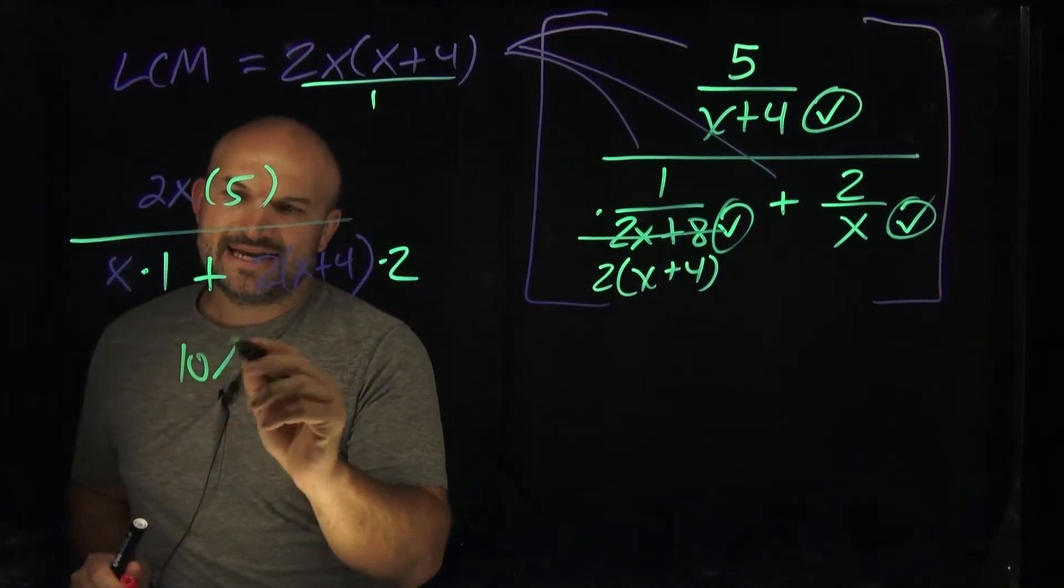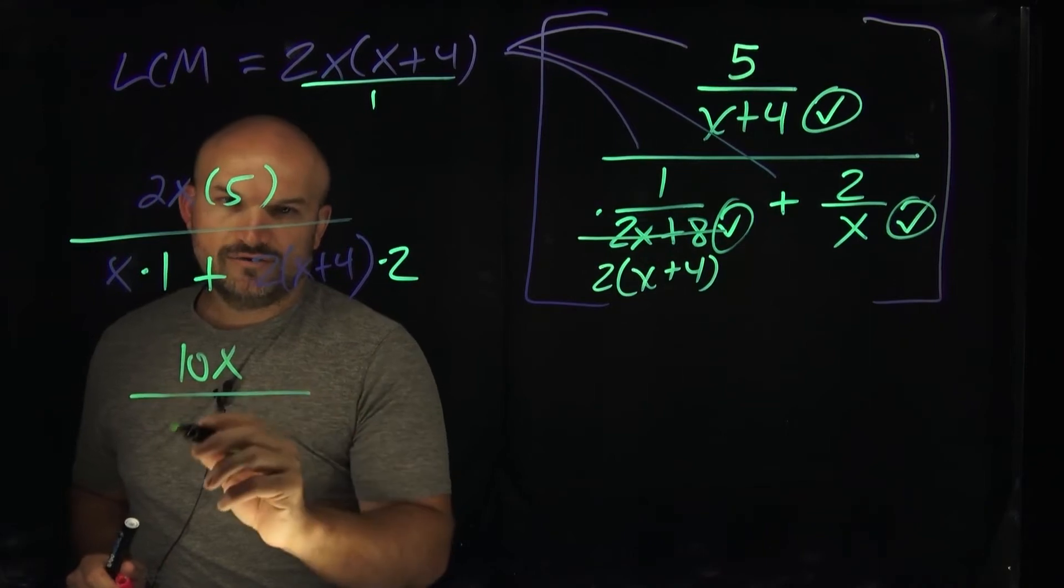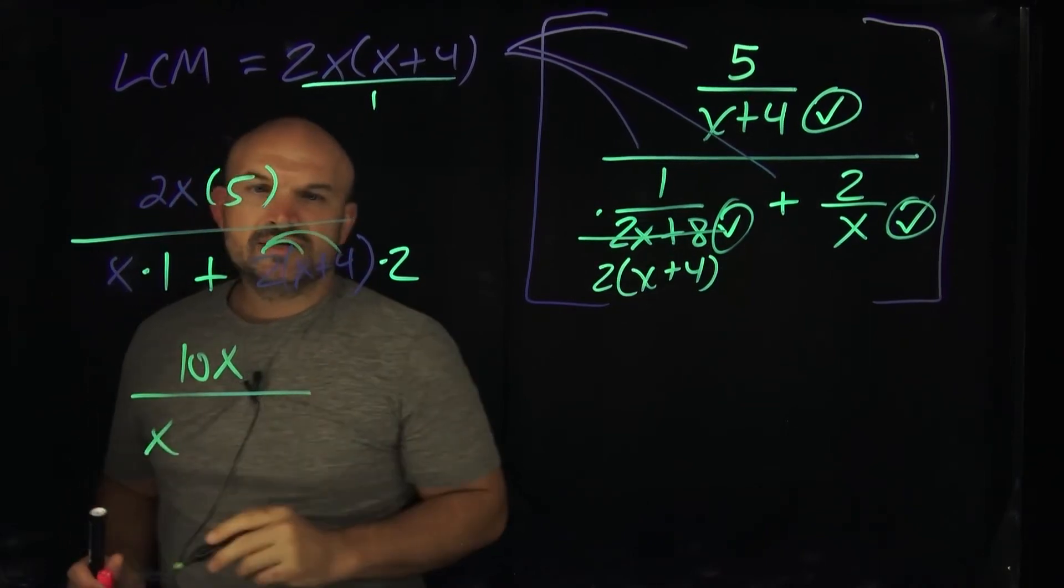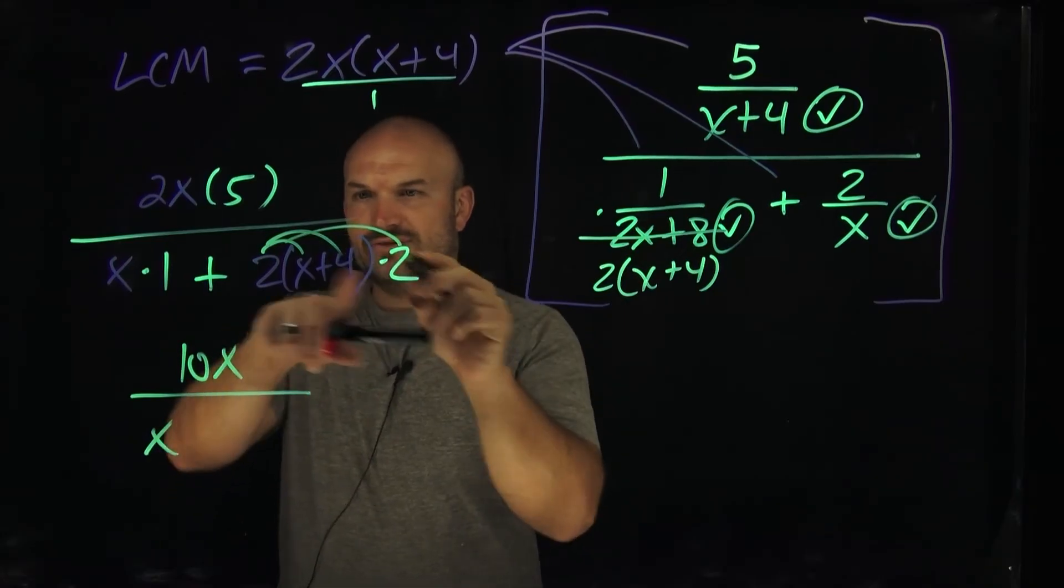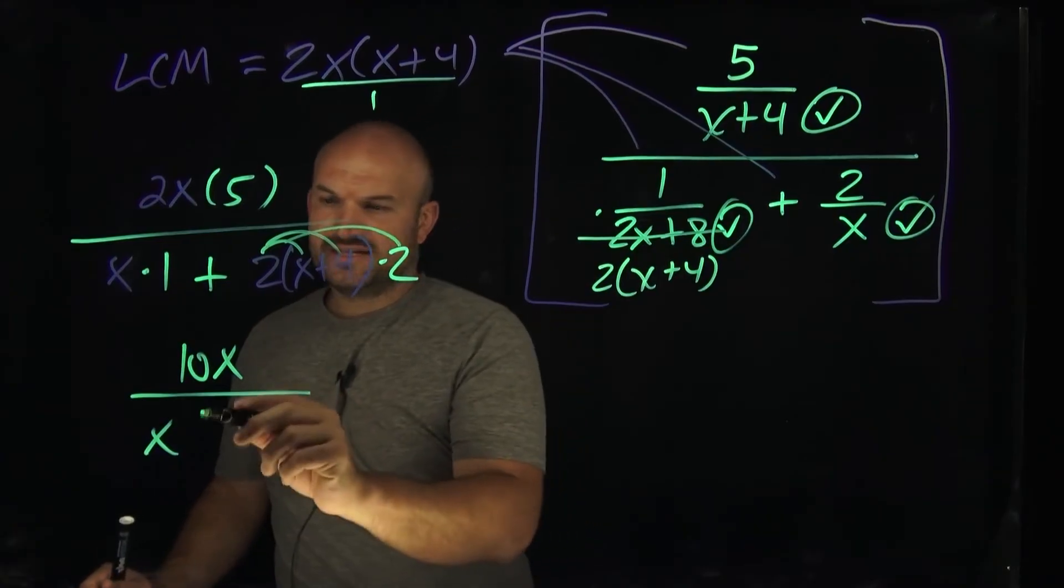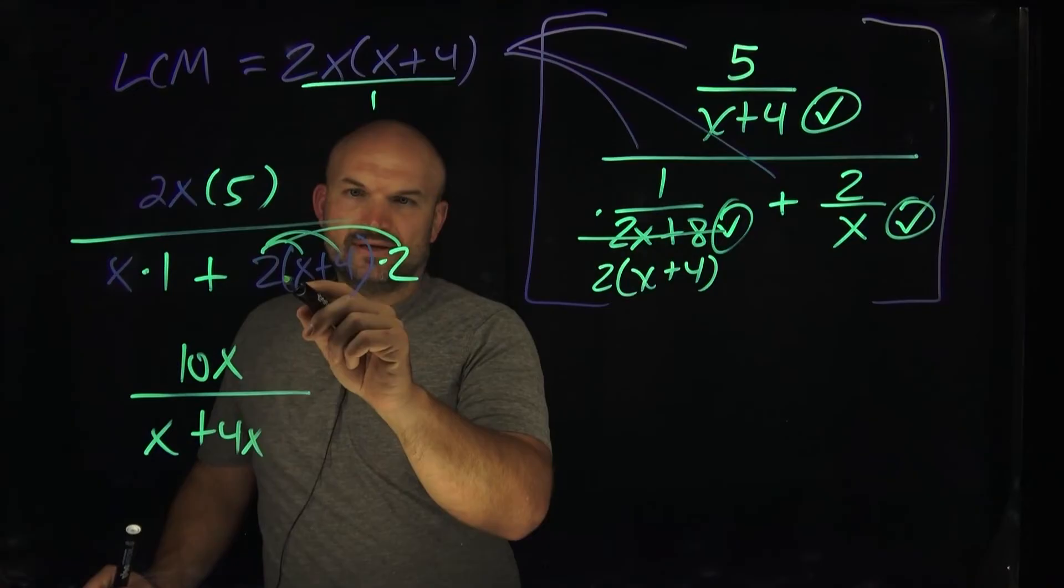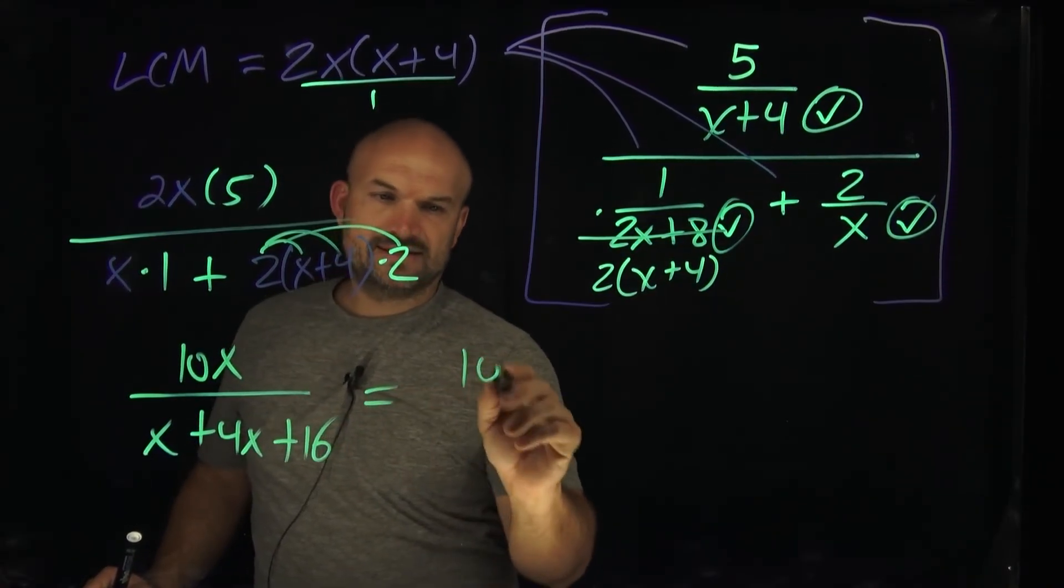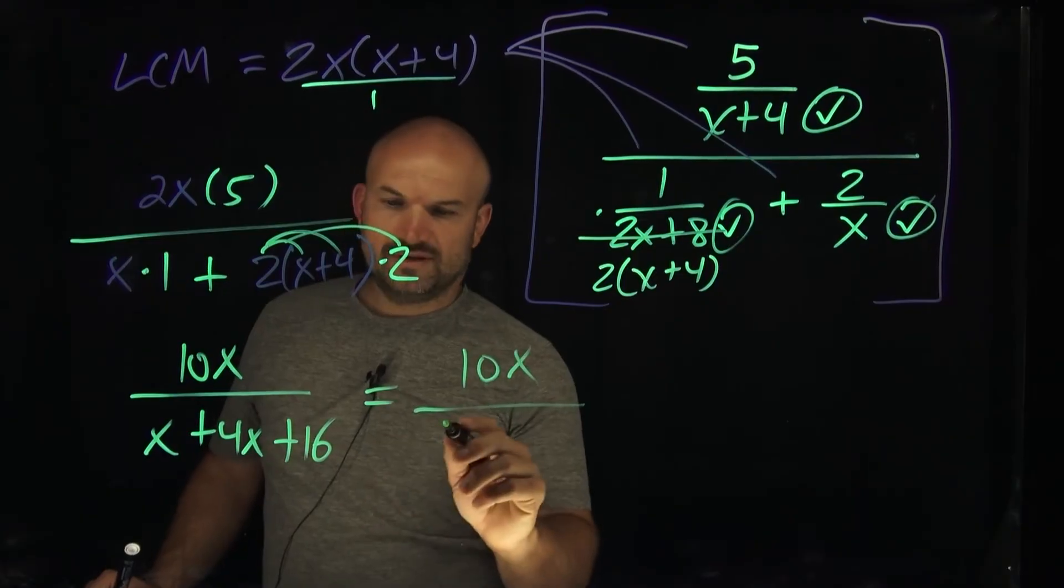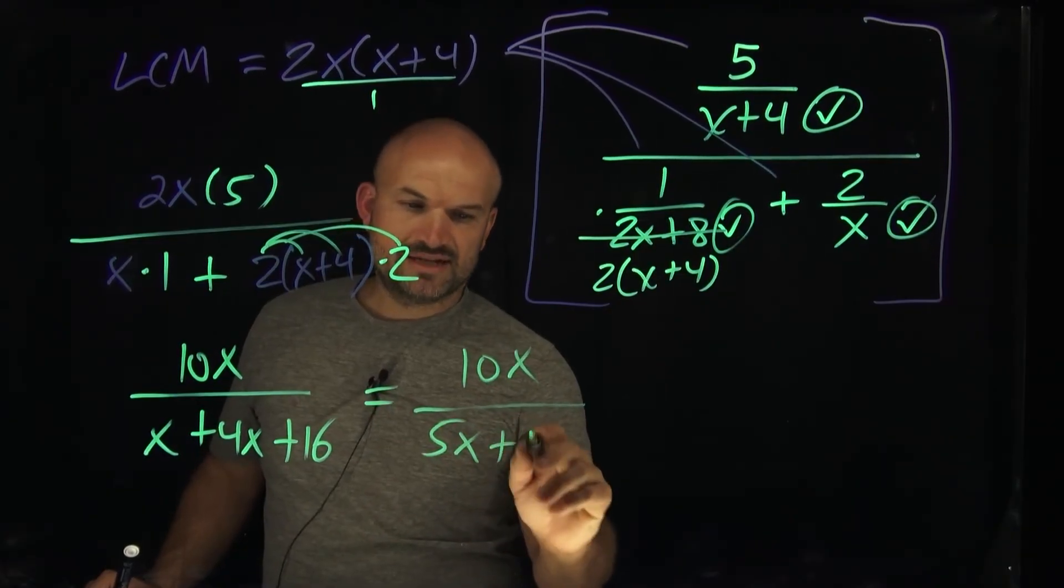So I have 2x times 5, which is going to be 10x. That's going to be all over x. I can distribute here. So that's going to be, actually, let's multiply the 2 times 2 is 4. So that's going to be plus 4x. And that'd be plus 16. Cool. And now I can rewrite this as 10x all over, let's see, what is that going to be, 5x plus 16.